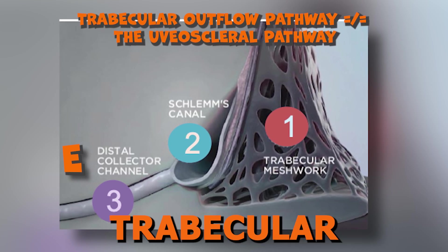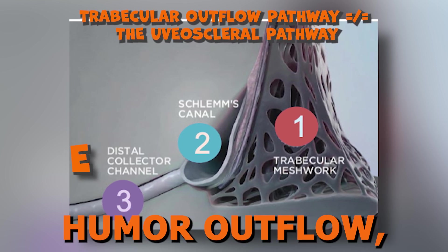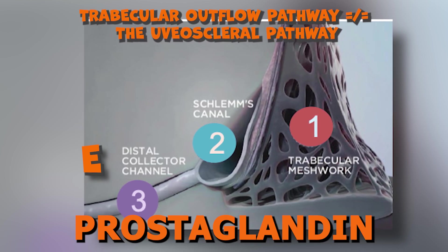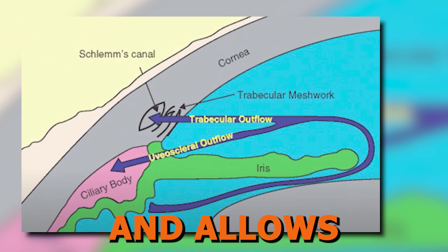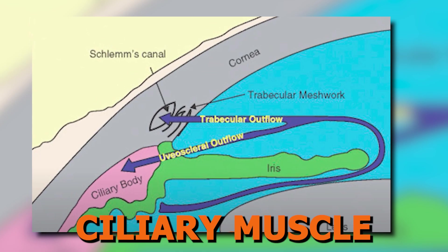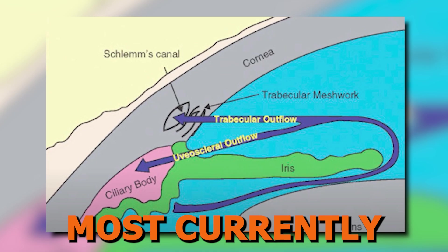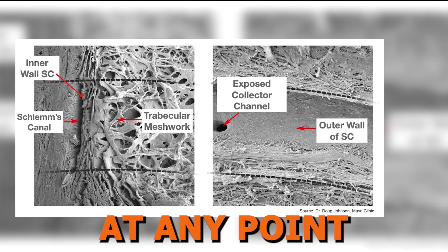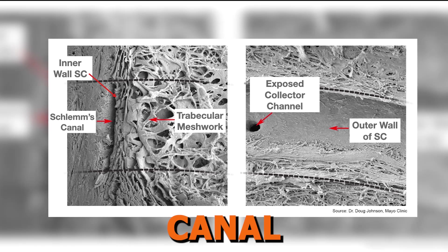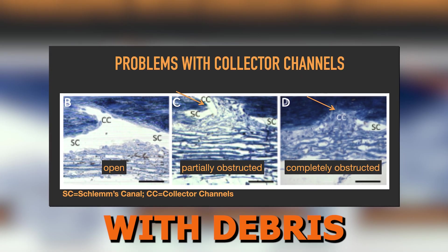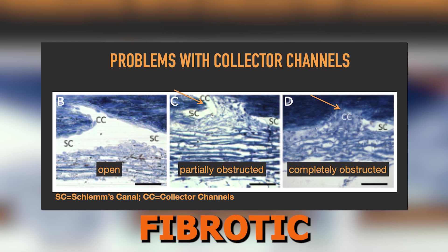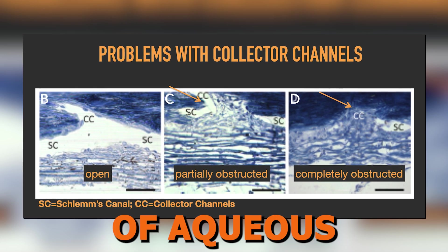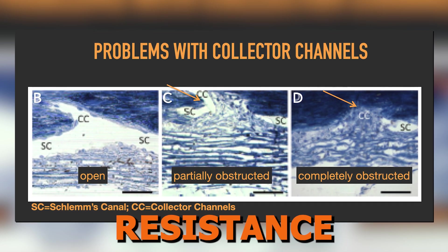Note that the conventional trabecular pathway, which is the main route of aqueous humor outflow, is very different from the uveoscleral pathway associated with reduction of eye pressure with prostaglandin analogues. The uveoscleral pathway is pressure-insensitive and allows aqueous humor to exit through the ciliary muscle to the supraciliary space, not Schlemm's canal. Most currently available angle surgeries specifically work on the trabecular outflow pathway. At any point within the trabecular meshwork, the lumen or walls of Schlemm's canal, or the collector channels, tissue can get clogged with debris or herniations, in addition to becoming fibrotic, resulting in pores becoming more rigid and smaller — ultimately limiting aqueous humor flow and resulting in elevated eye pressure.